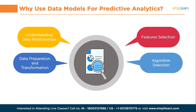In healthcare, predictive analytics can be used to identify patients at risk of developing certain diseases, improve diagnosis accuracy, and personalize treatment plans. It also helps hospitals optimize resource allocation, predict patient flow, and forecast disease outbreaks well in advance. And finally, in retail, predictive analytics is used for demand forecasting, inventory management, and customer segmentation. Retailers can predict customer behavior, optimize pricing strategies, and personalize marketing campaigns to enhance customer satisfaction and increase overall sales.